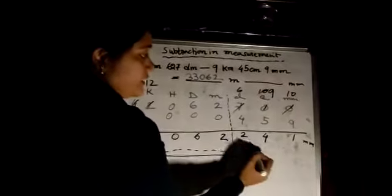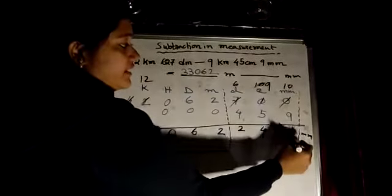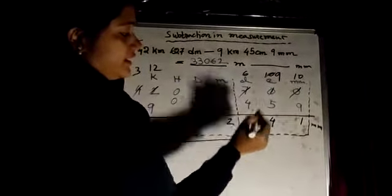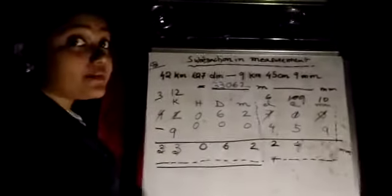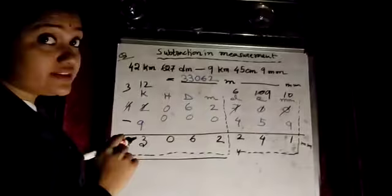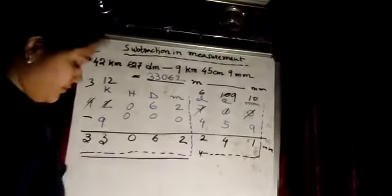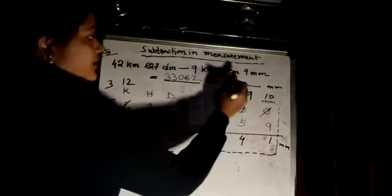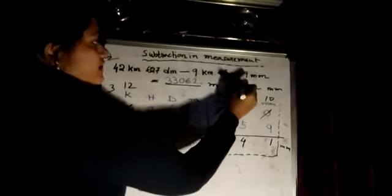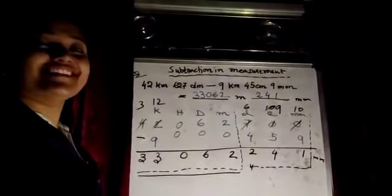And how much portion is remaining here? 2, 4, 1. This much. Since this is millimeter, take it like this. I am stopping here. Why? Because this portion I have already taken and placed. So the remaining portion I will take now, and that is 241. That is the answer.